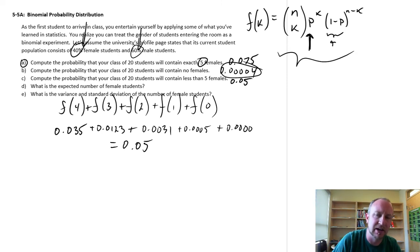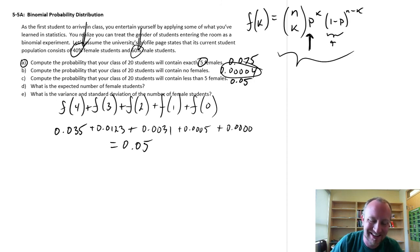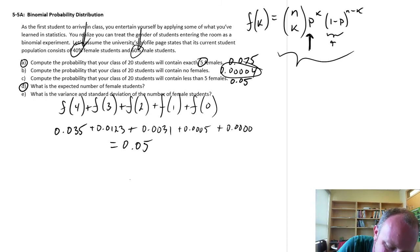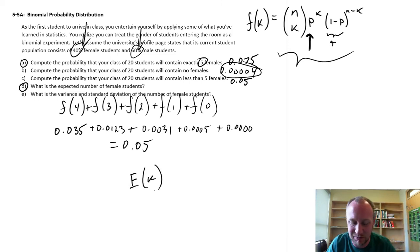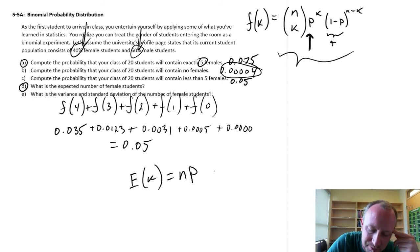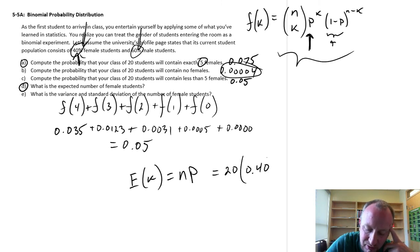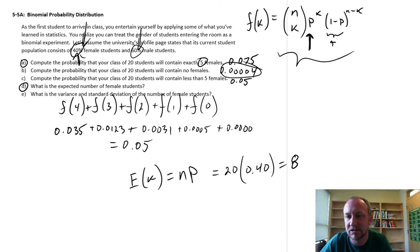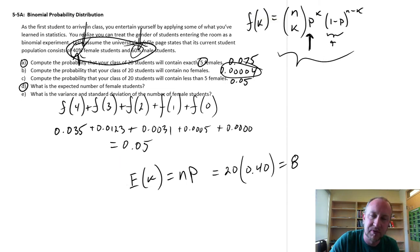Part D: what is the expected number of female students? This is relatively straightforward. The expected number of successes — the expected number of female students — is simply the total number of trials times the probability associated with success. So here we have 20 students, with a probability of success of 0.4, and so I would expect 8 of those 20 students on average to be female. My expected value is equal to 8.